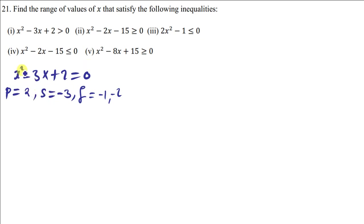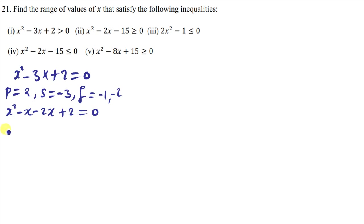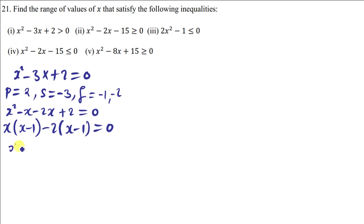Now we replace the middle term using these factors. So we have x squared minus x minus 2x plus 2, equal to zero. Opening the brackets and factorizing, we get x(x minus 1) minus 2(x minus 1), giving us (x minus 1)(x minus 2) equal to zero.